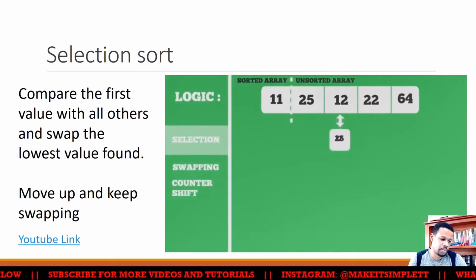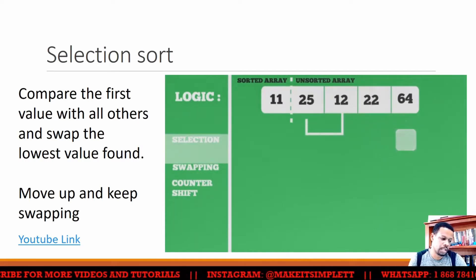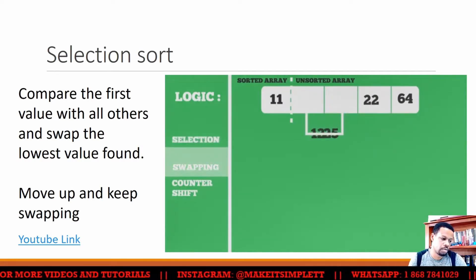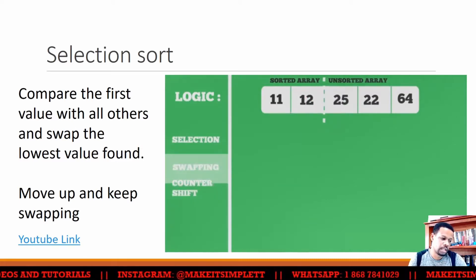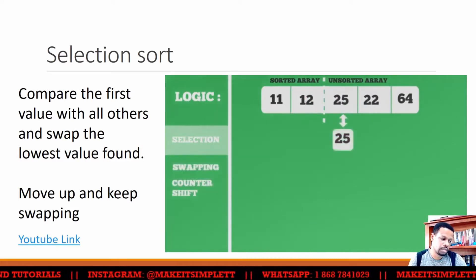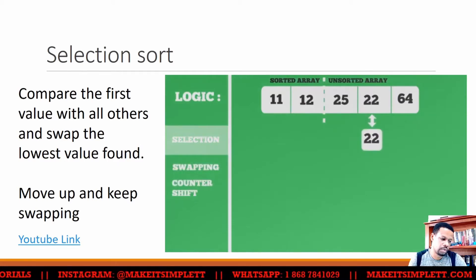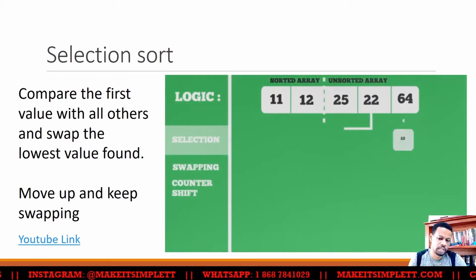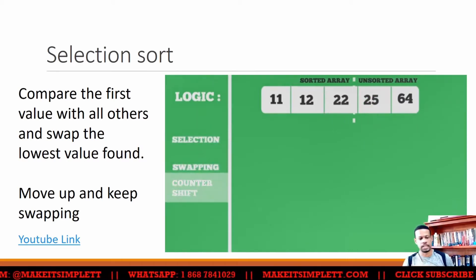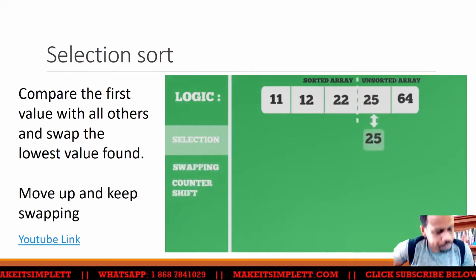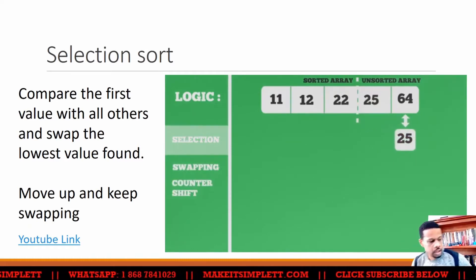Then it's going to compare again, find the smallest number, and swap with the number that it's on right now. Then it's going to compare again to find out if there's something smaller. If there's something smaller, it will swap and keep going up until it cuts off the whole list.